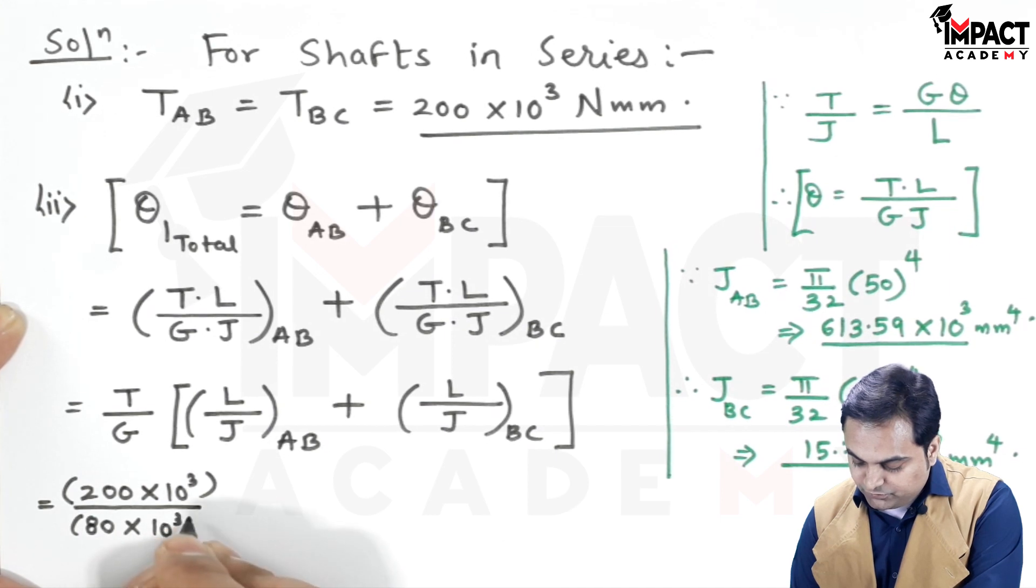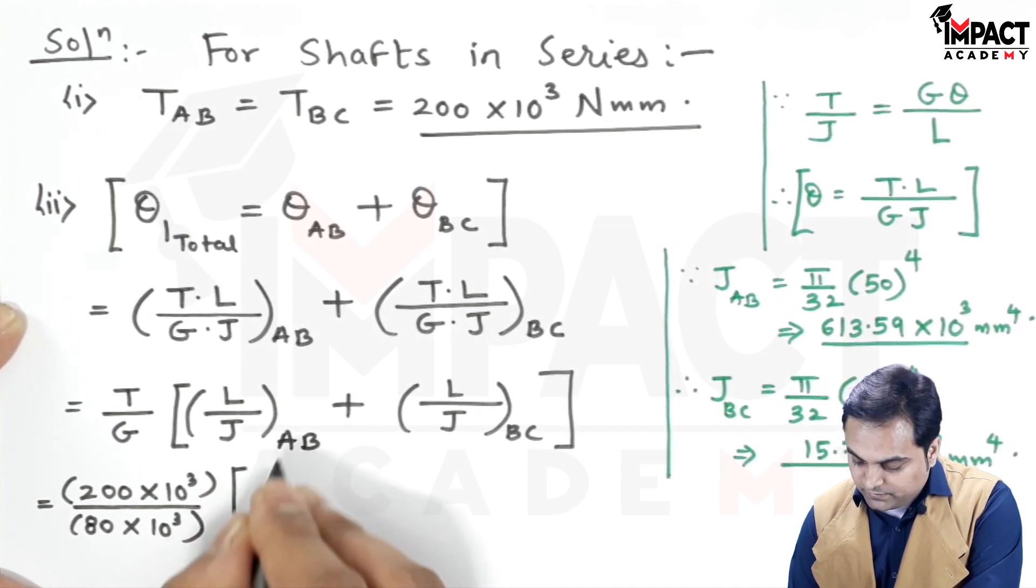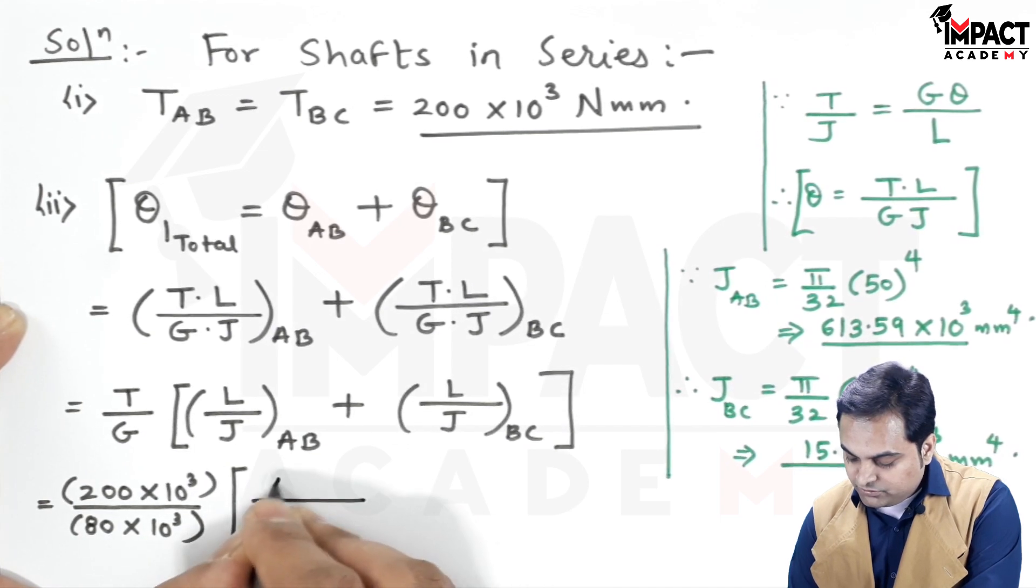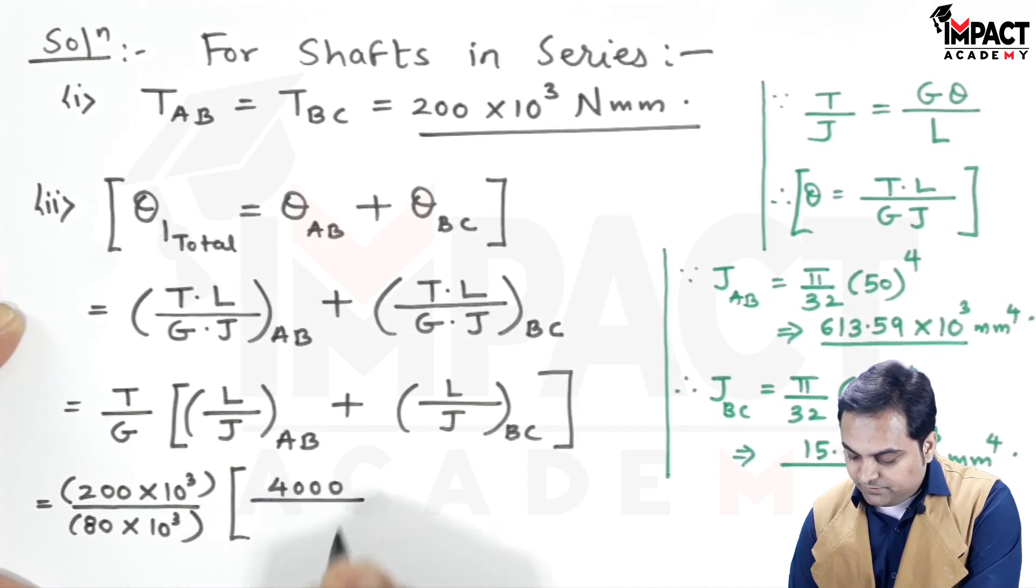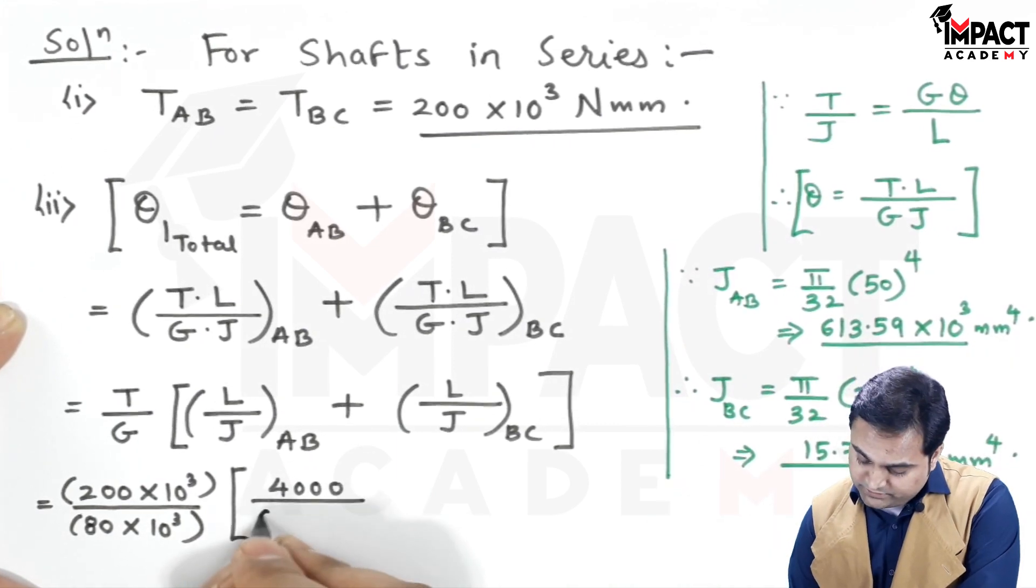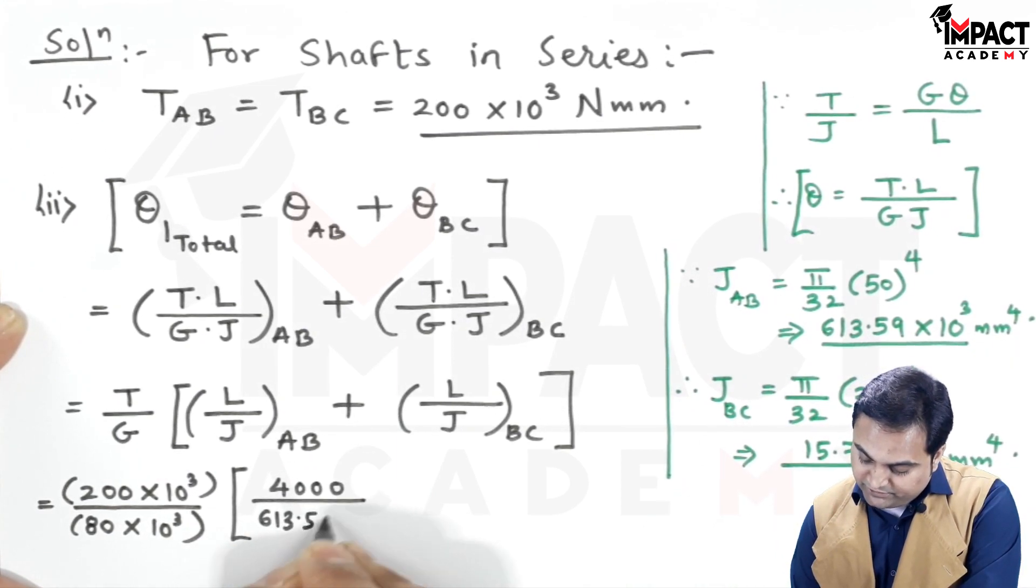Length of portion AB is 4m, which is 4000mm. J for portion AB is 613.59×10³ mm⁴.